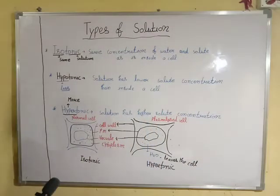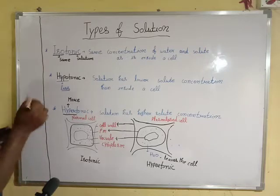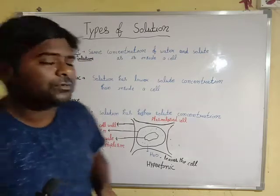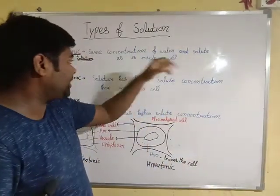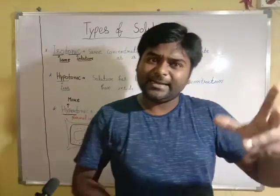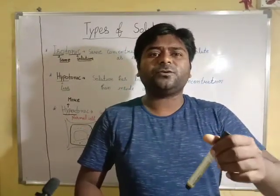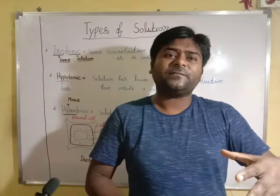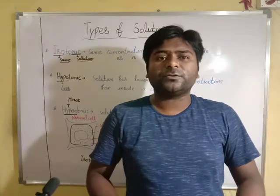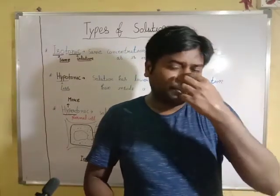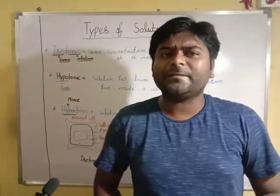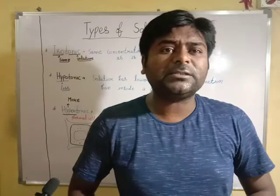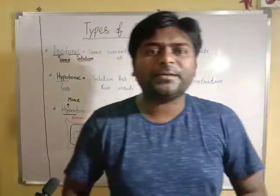The first type of solution is known as isotonic solution. The meaning of iso means same, and tonic refers to the solution. Whenever we have the same concentration of water and solute as inside a cell — meaning outside the cell and inside the cell the concentration is the same — there is no movement of solvent, and there will not be any kind of change in the shape of the cell.